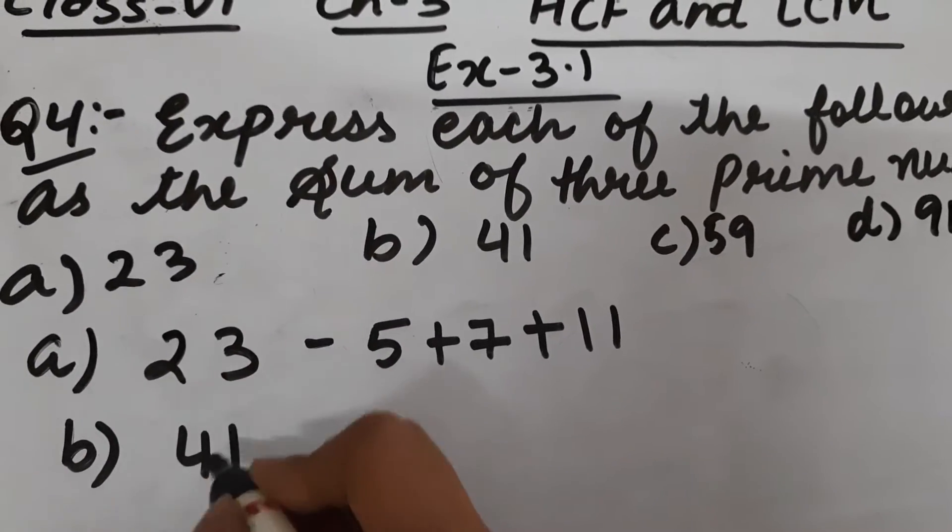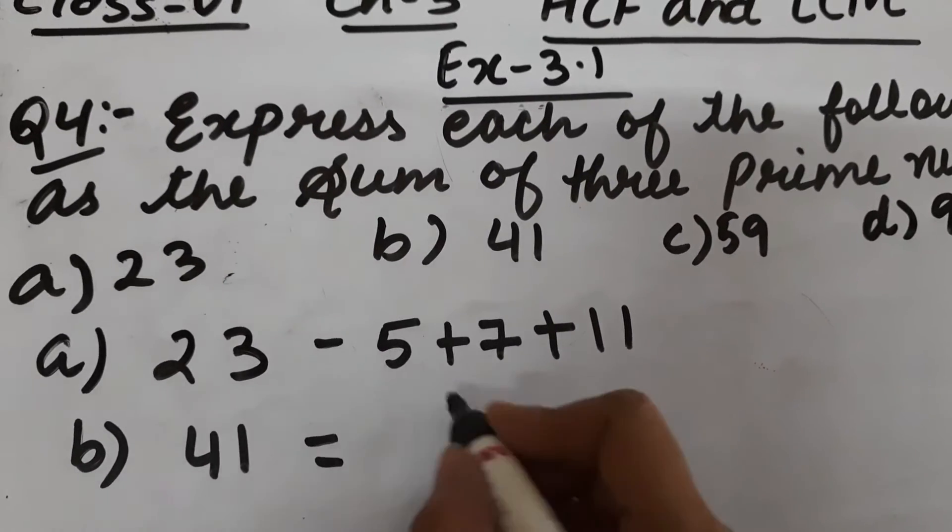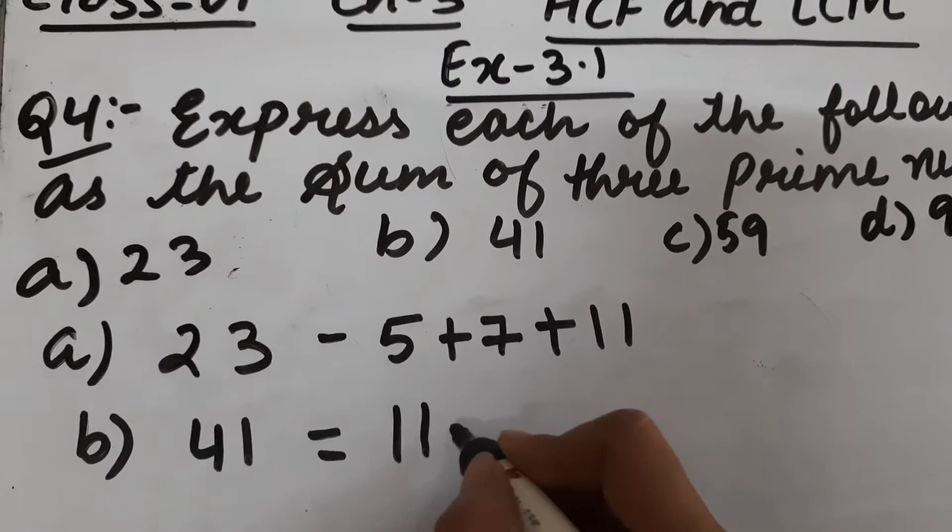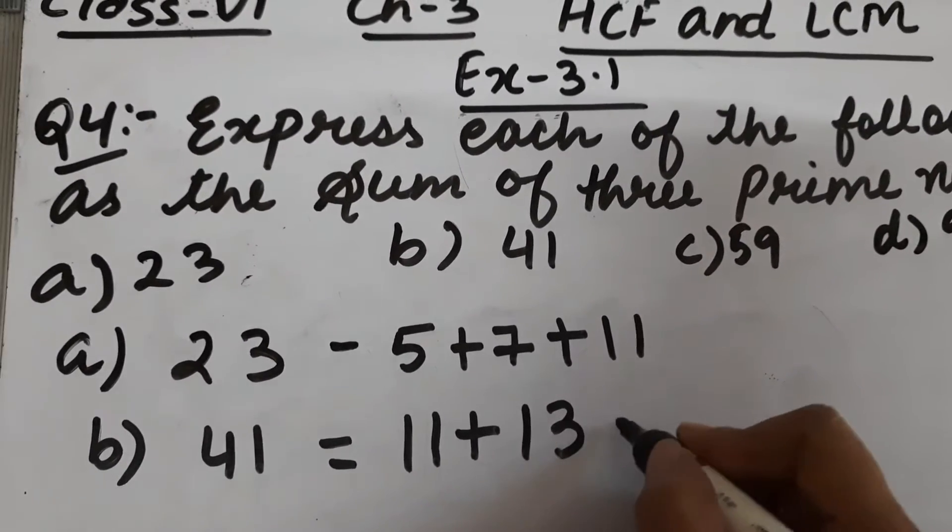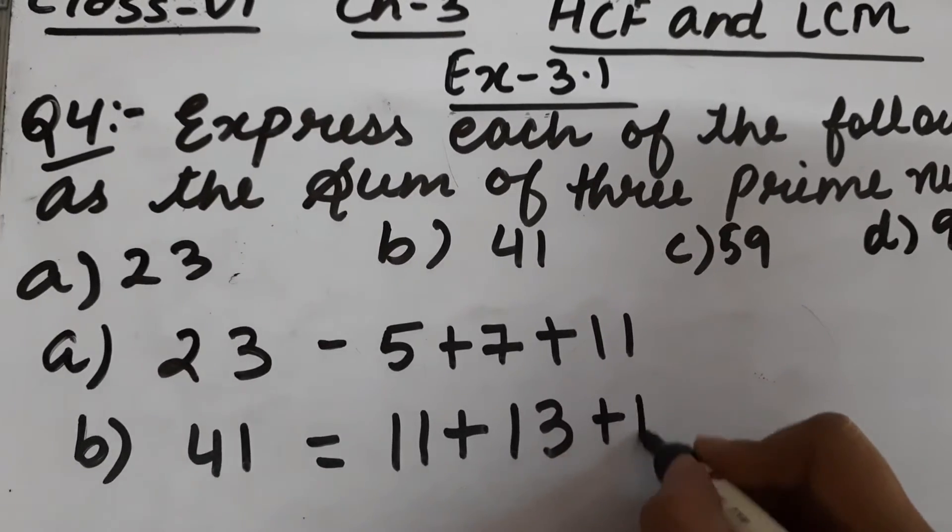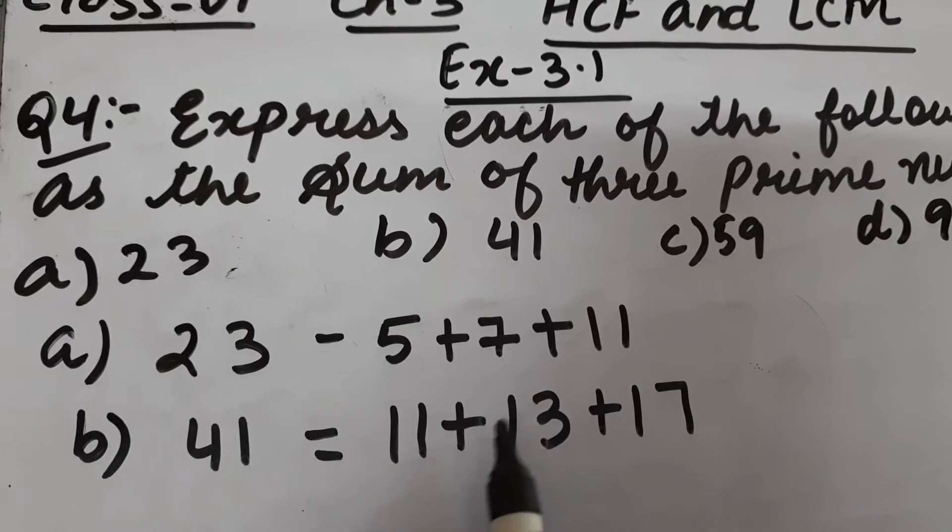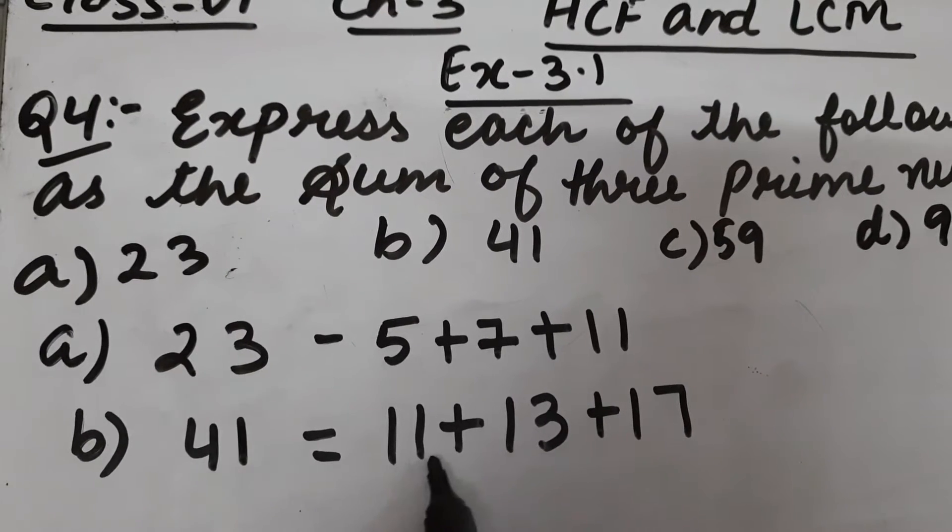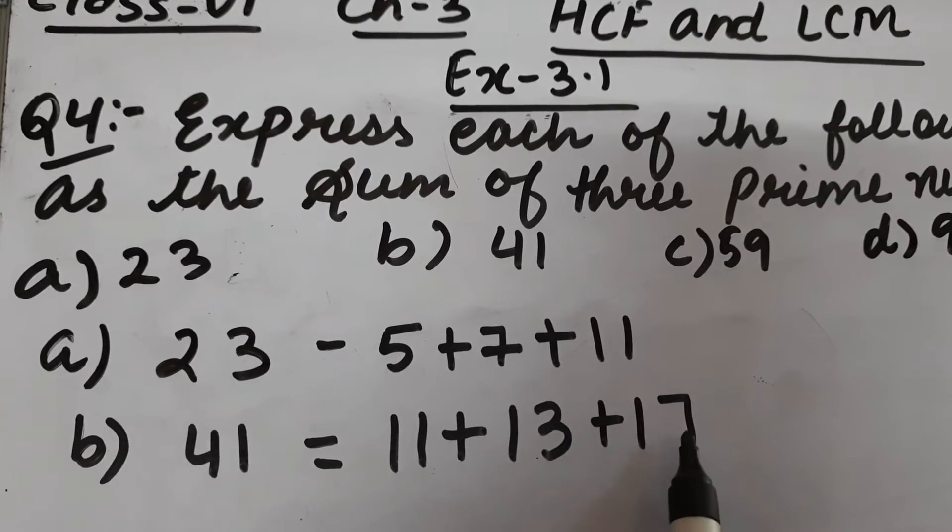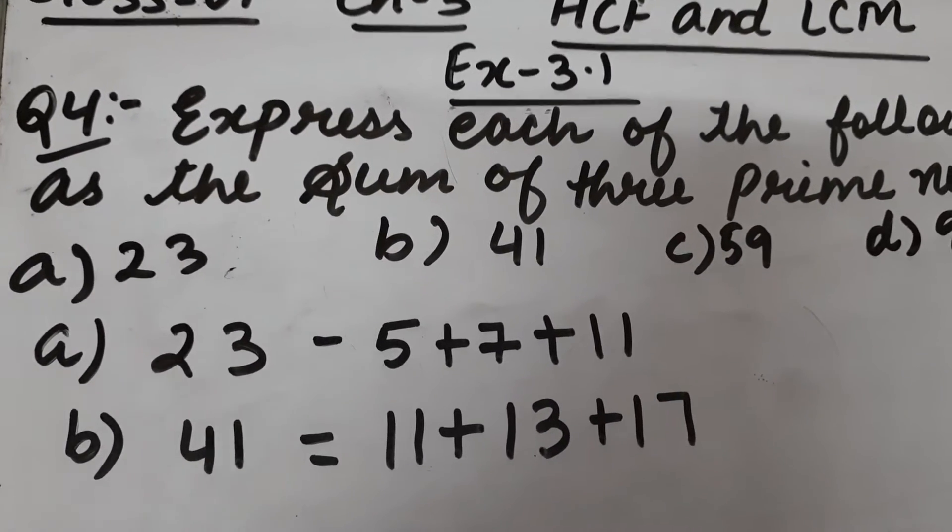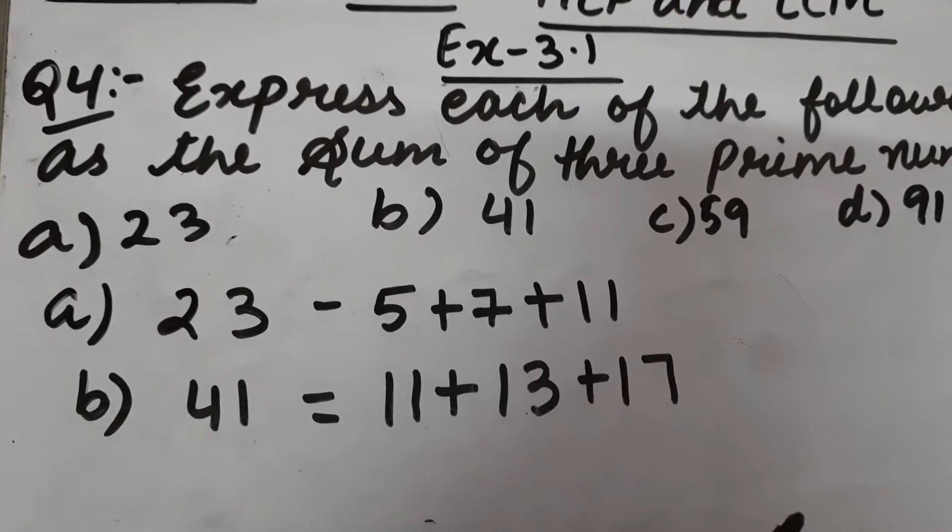Part B is 41. We have to write 41 as sum of three prime numbers. The first prime number I am taking as 11, second I am taking 13, and third I am taking 17. 11 plus 13 is 24, and 24 plus 17 is 41. So this way we write a number as sum of three prime numbers.